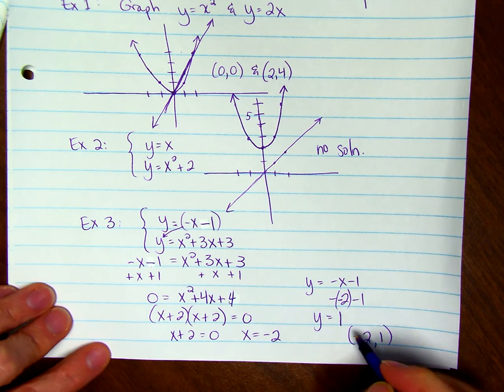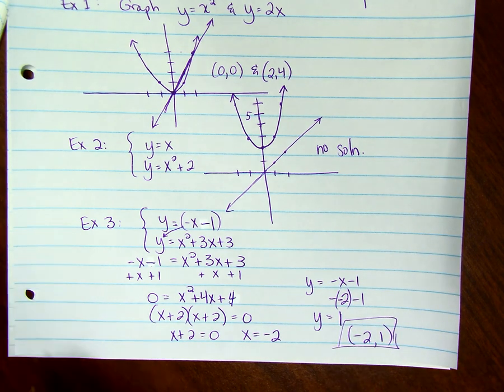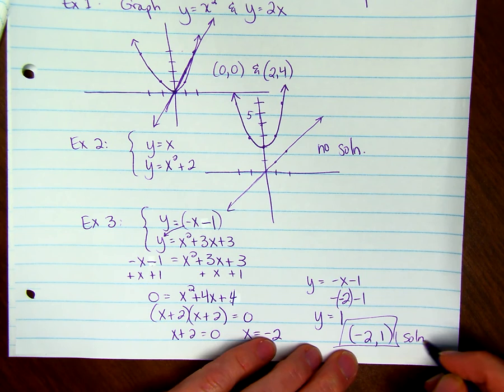So our solution is (-2, 1). And that's where they're going to intersect. And there's only one point here that they're going to intersect. And that's your solution.